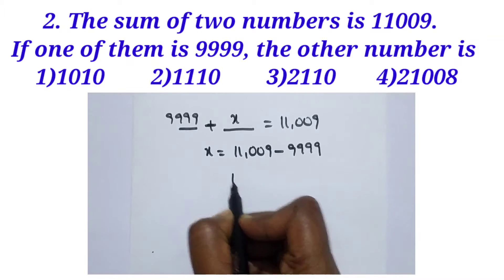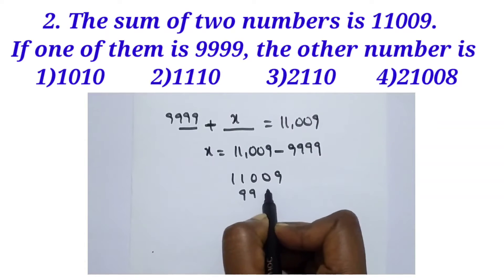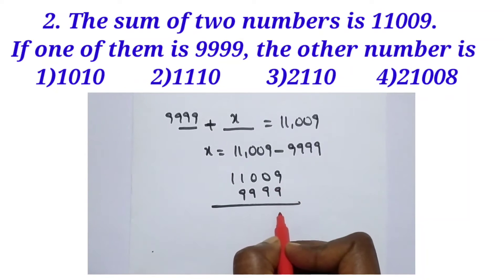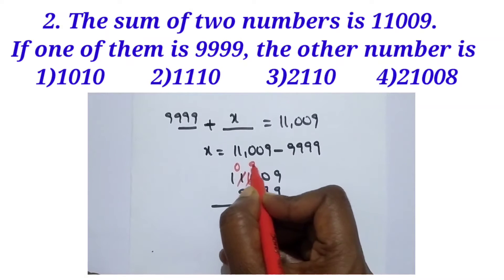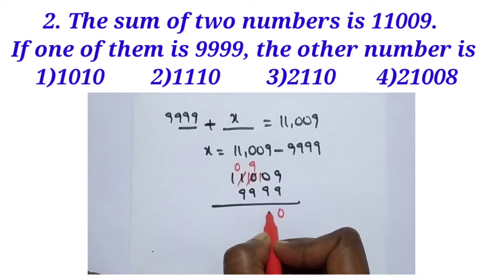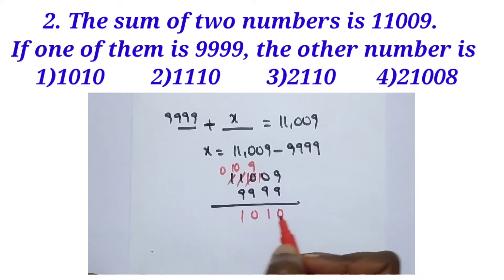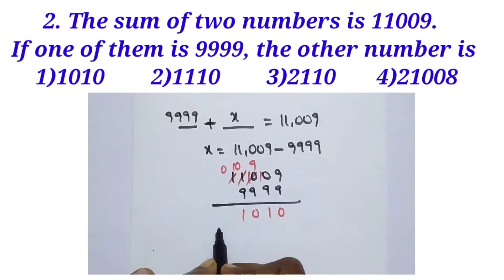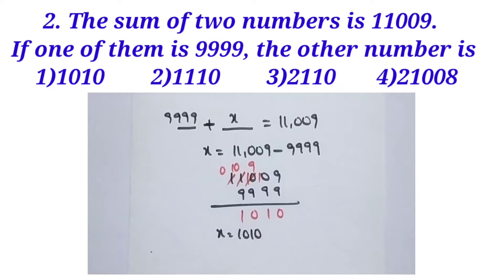Subtract: 11,009 minus 9,999. Working through the subtraction: 9 minus 9 is 0, then borrowing as needed. The other number x equals 1,010. Option 1 is the right answer for this question.